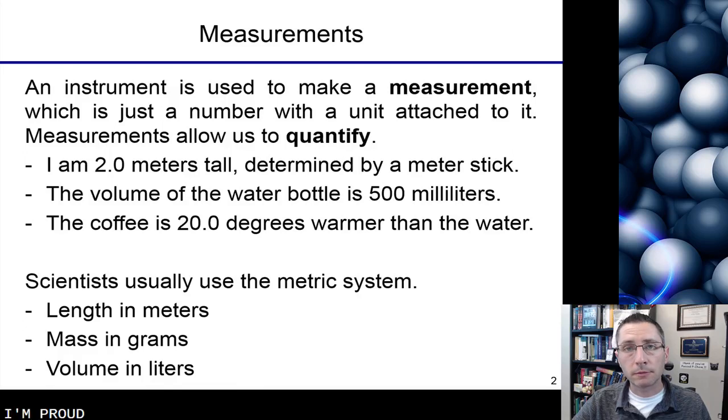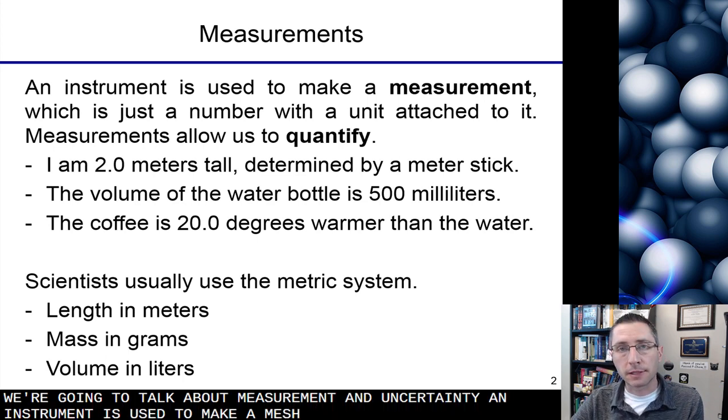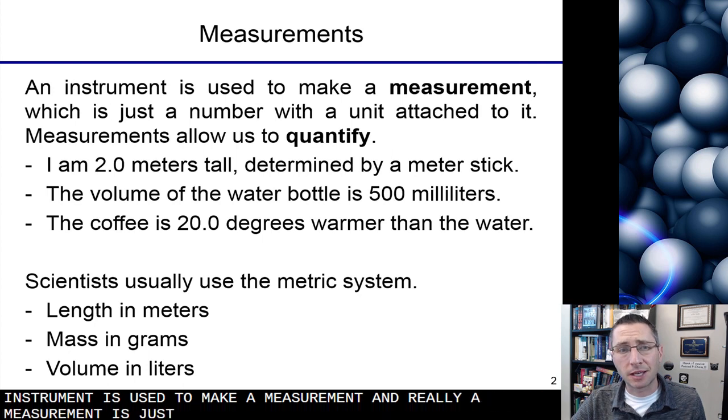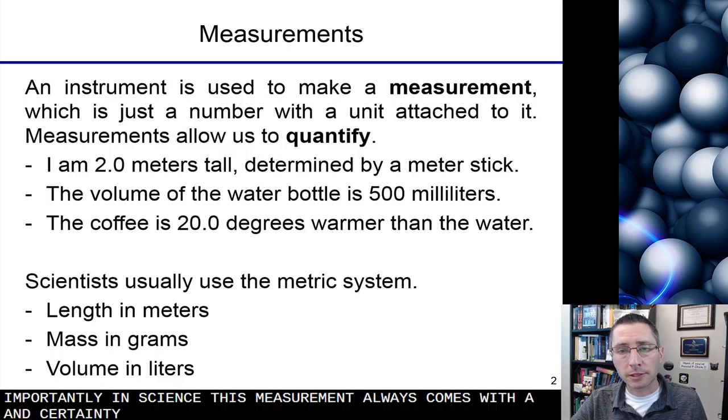Hi, I'm Professor Melko, PhD chemist and university professor, and today we're going to talk about measurements and uncertainty. An instrument is used to make a measurement, and really a measurement is just a number with units attached to it. But importantly in science, this measurement always comes with uncertainty, and that's what we're going to talk about today.